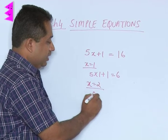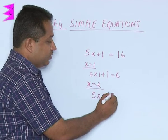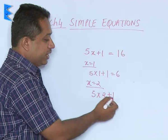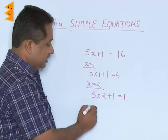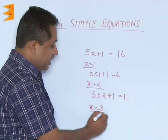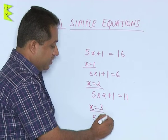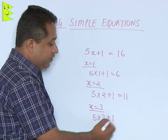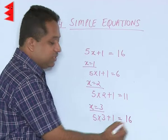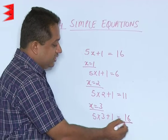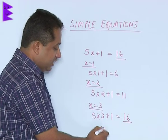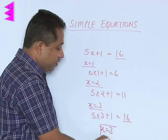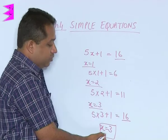You take x is 2, we get 5 into 2 plus 1. 5 into 2 is 10, 10 plus 1 is 11. Again not equal to the RHS. So we get 16. So we get 16 here and we are having 16 on the RHS. Therefore we can say that the solution for this will be x is equal to 3.